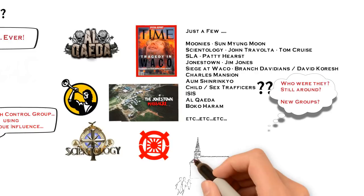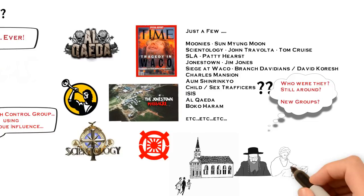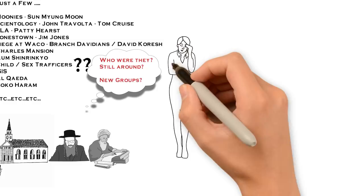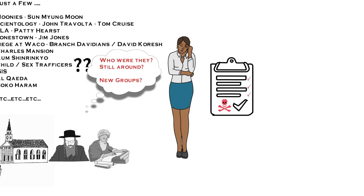In fact, some go so far as to consider all religions to be cults. Well, there are very specific indicators of a cult or a high control group, and it's when that level of control becomes dangerous that we need to worry. So when is that?